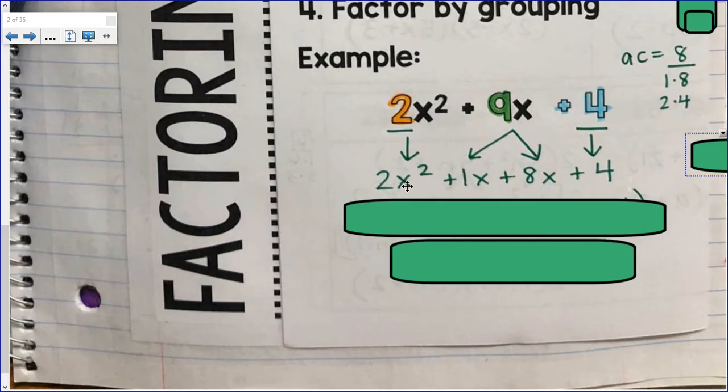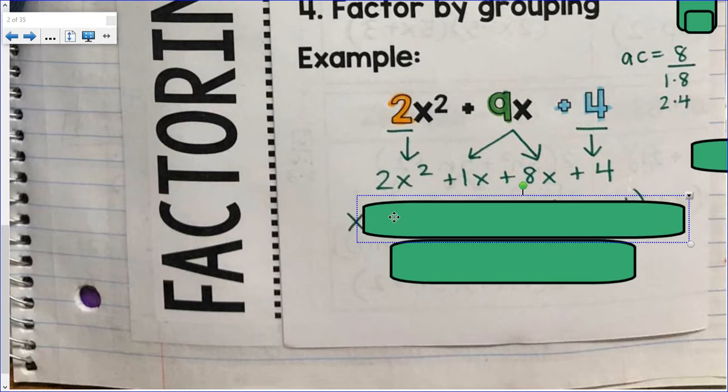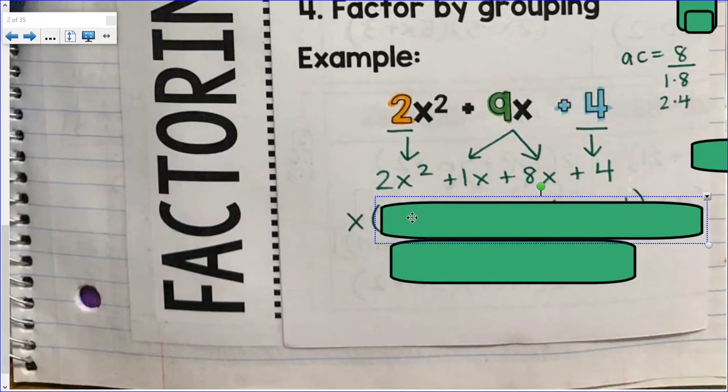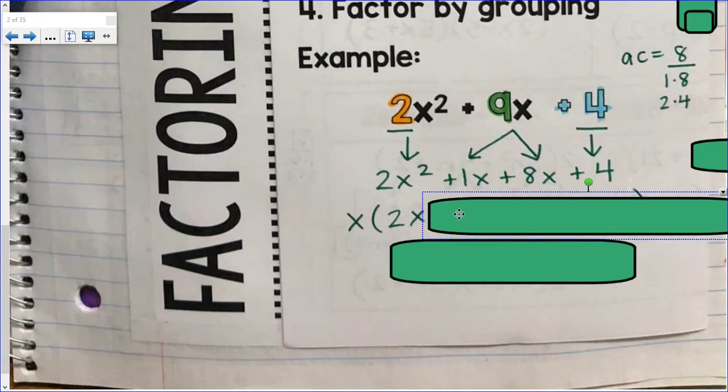Just look at the first binomial. 2x² plus 1x. We have to factor out the GCF. The GCF of those two terms would be x. x times 2x is 2x². x times 1 is 1x.